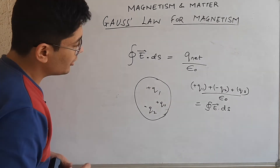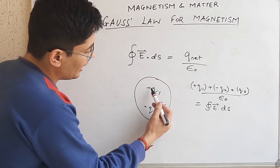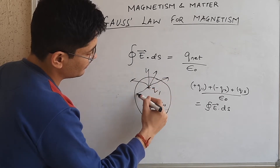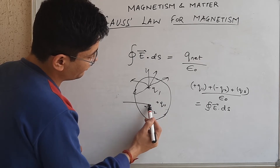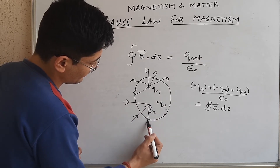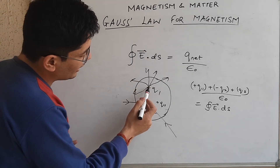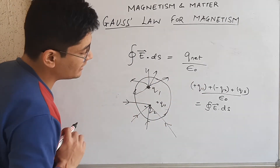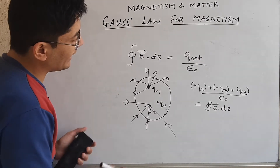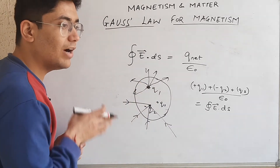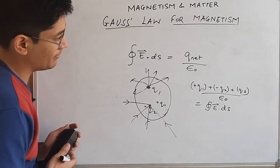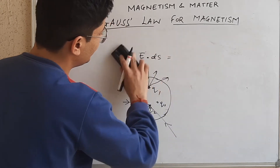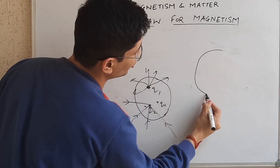If there is a positive charge, it is an electric field source, and if there is a negative charge, it is an electric field sink. This means electric field lines start from positive charges and end at negative charges. So for a closed surface enclosing charges, electric field lines can start or stop. But the difference with the magnetic field is that magnetic field lines are closed loops.